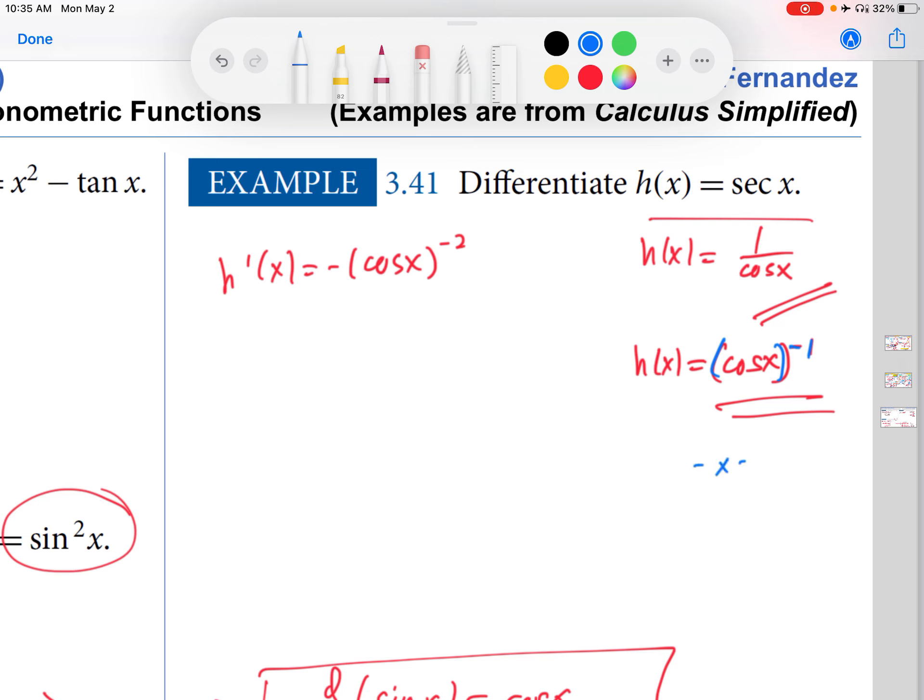Because the outer function here is basically x to the negative 1, whose derivative is minus x to the minus 2. So that's where this and this come from. Okay, and then I multiply this by the derivative of the inside.